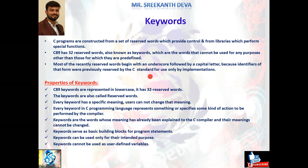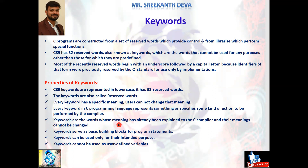Most recently reserved words begin with an underscore followed by a capital letter. The basic properties of keywords: C89 keywords are represented in lowercase; it has 32 reserved words, all of which must be declared in lowercase. The keywords are also called reserved words. Every keyword has a specific meaning — the user cannot change that meaning. Keywords represent something or specify some kind of action to be performed by the compiler. Keywords serve as basic building blocks for program statements and cannot be used as user-defined variables or identifiers.